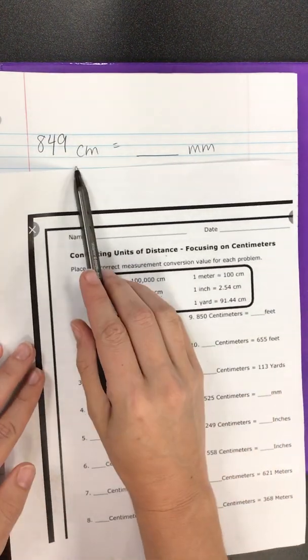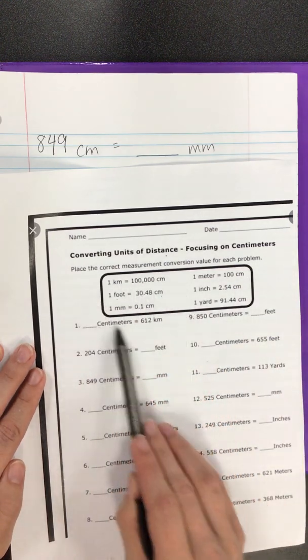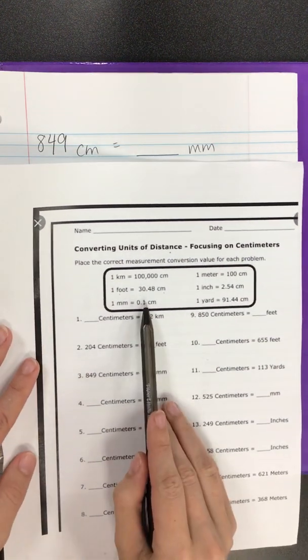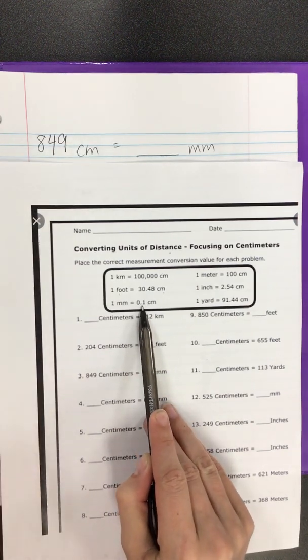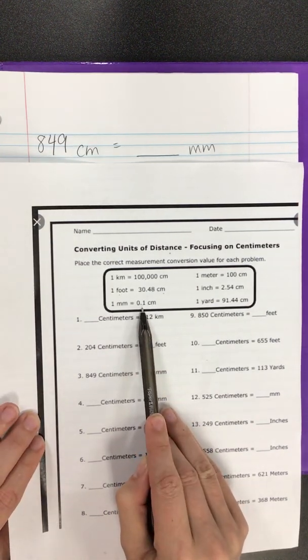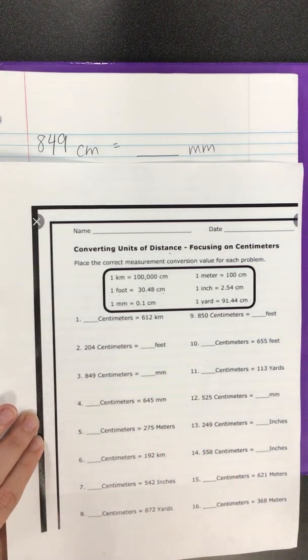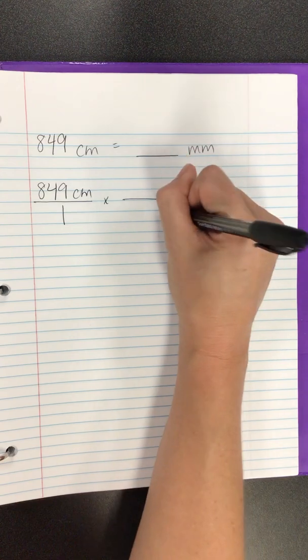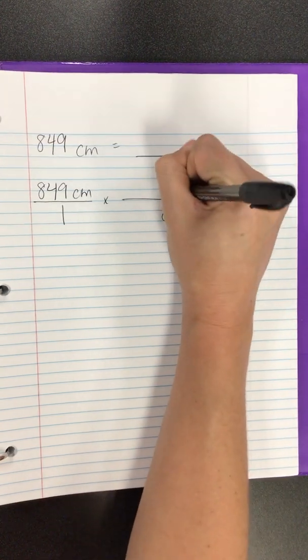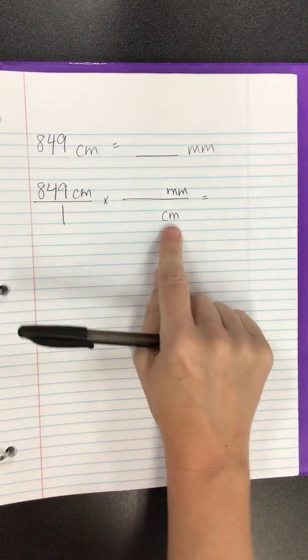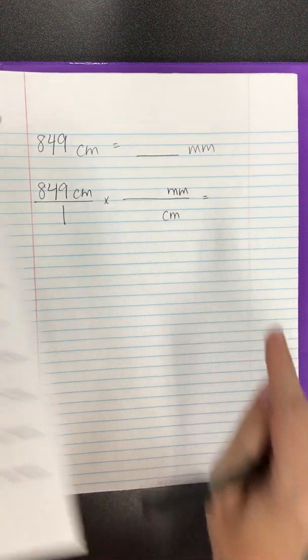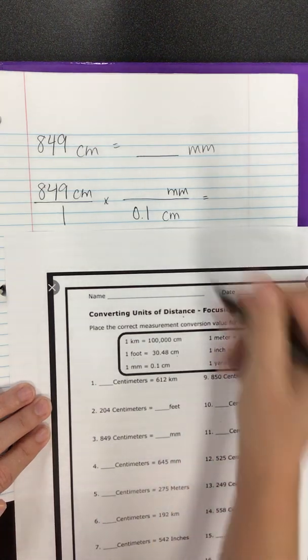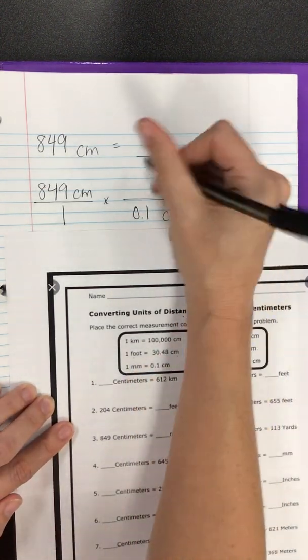Choose our conversion factor. We have centimeters and millimeters. The trick here, centimeters is a decimal. Yes, you can put decimals in while you're multiplying fractions. In this case, don't forget, we put centimeters on the bottom. We have 0.1 centimeter equals 1 millimeter.